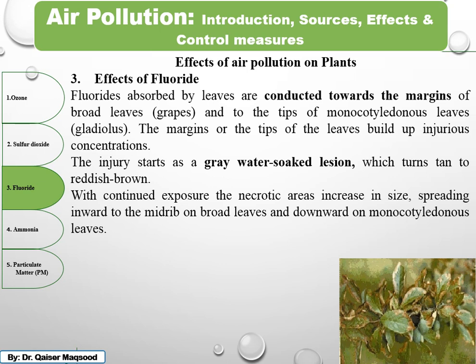Regarding the effect of fluoride: fluoride is absorbed by the leaves and conducted towards the margin of the leaves. For broad leaves, the margin will be most affected and will show dieback. For monocotyledon or narrow leaves, the tips of the leaves will be affected. Fluoride accumulates at the tip or margin until it builds up to an injurious concentration.